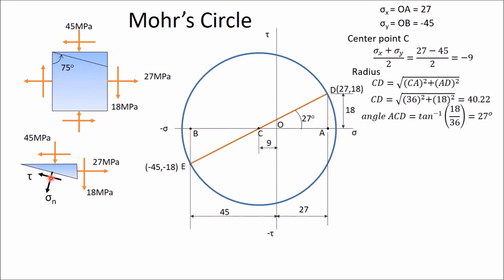To determine the state of stress in the plane inclined at 75 degrees, mark this plane on the Mohr's circle. Since the plane makes 75 degrees anticlockwise from the x-plane, from CD (the x-plane) take an angle of double that—150 degrees—in the anticlockwise direction. Draw a line meeting the circle at point G. Point G represents the state of stress in this particular plane, so we need to determine the coordinates of G. Draw a vertical line from G to meet the abscissa at H; OH is the x-coordinate (normal stress) and HG is the y-coordinate (shear stress).